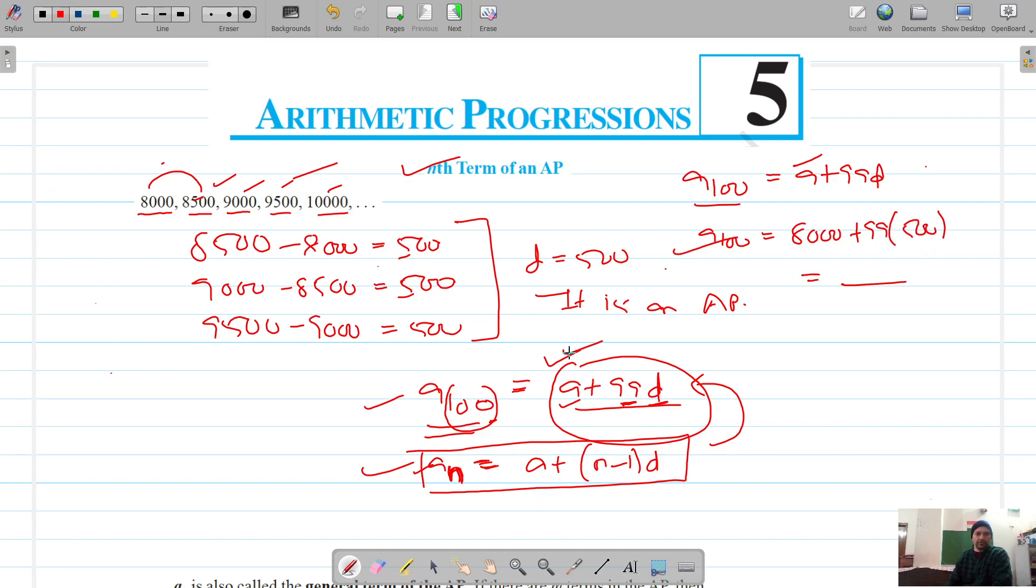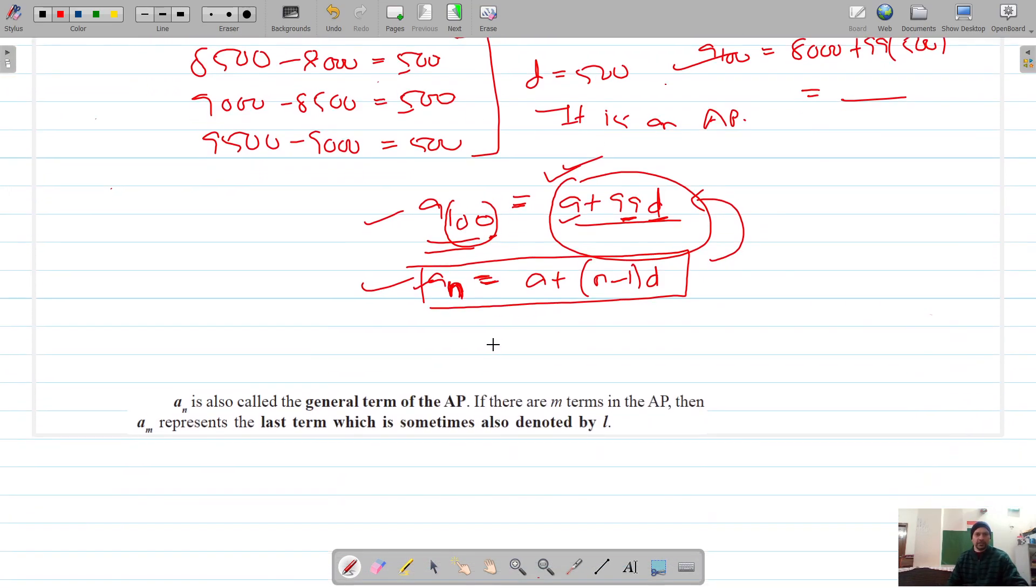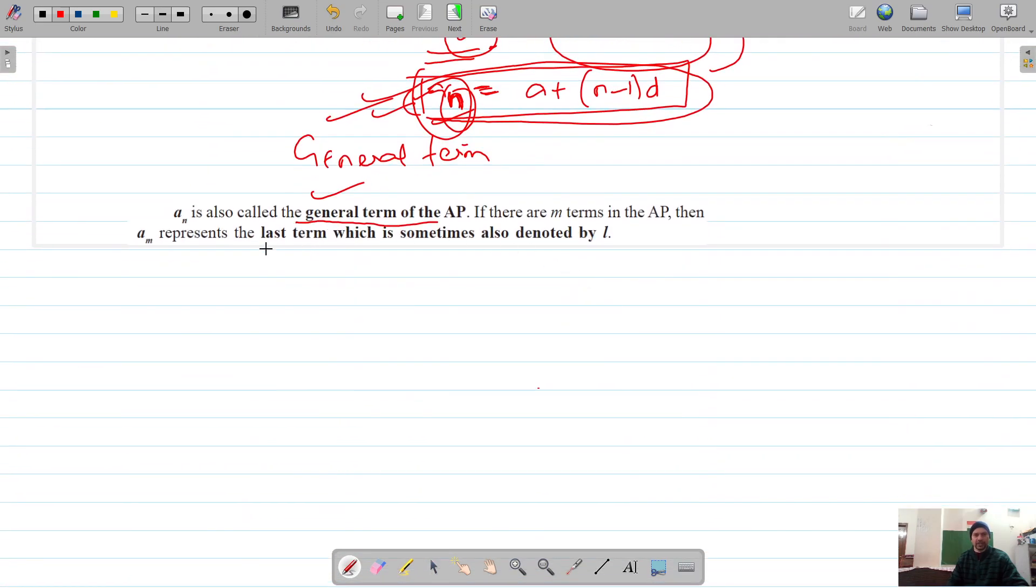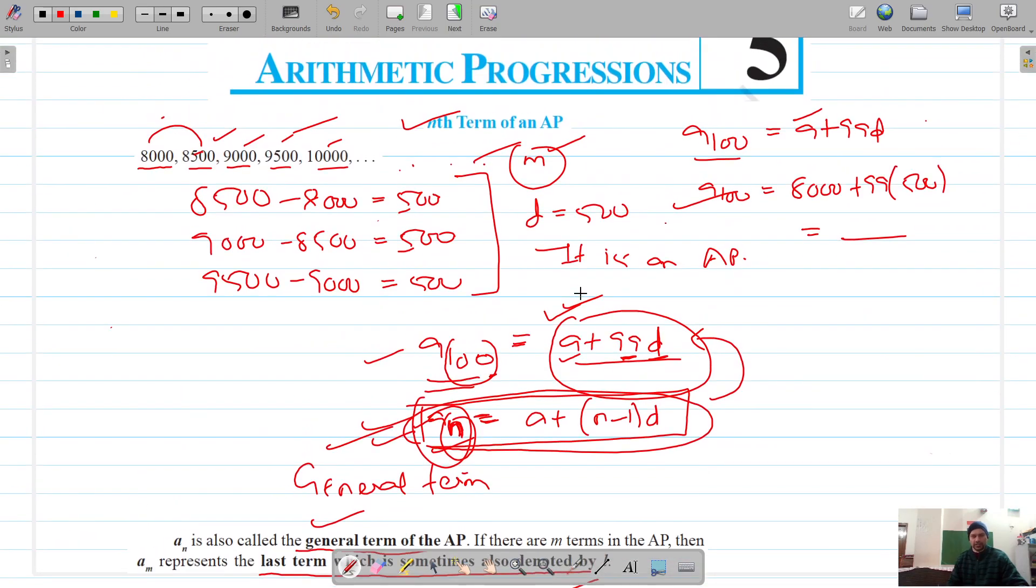This is called the nth term of an AP, and we denote it by an. So an is called the general term of an AP. We also call it the general term because if we put in any number of the term that we want to get, this will give us the general formula for that. If there are let's say total of m terms in an AP, this m term is called the last term, which is sometimes also denoted by L.